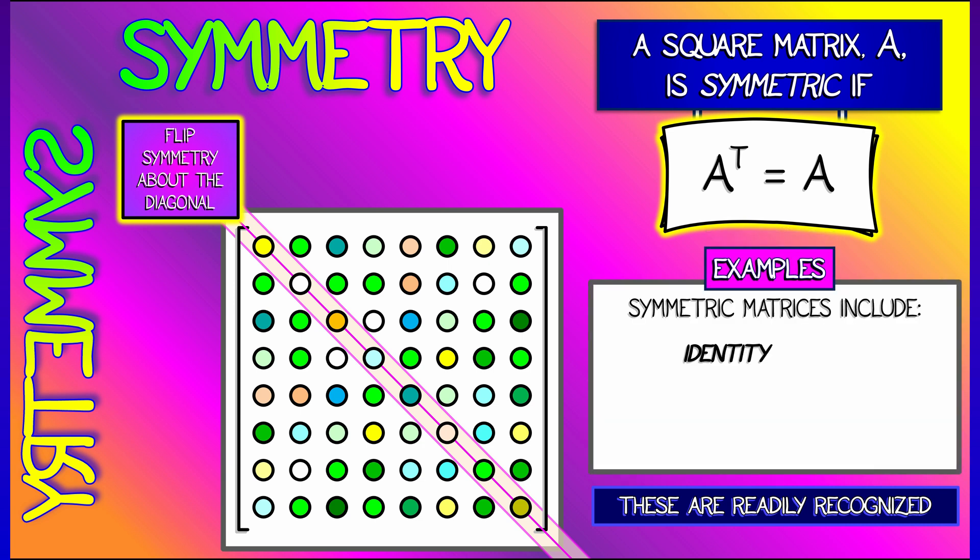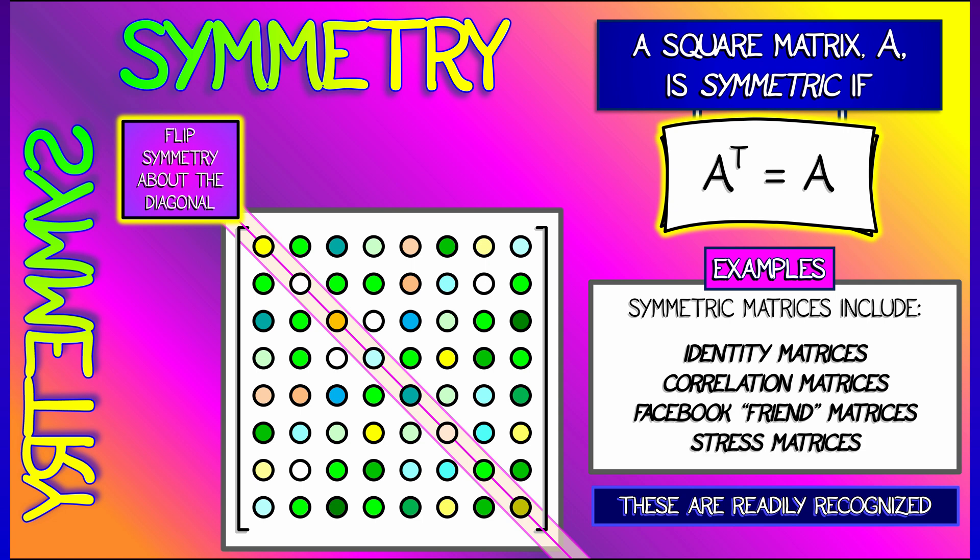Now, there are so many cool examples of symmetric matrices we've seen. The identity matrix, of course, correlation matrices, Facebook friend matrices, but not Twitter, and stress matrices. As we keep going, keep your eyes open for symmetric matrices. They almost always encode some special property.